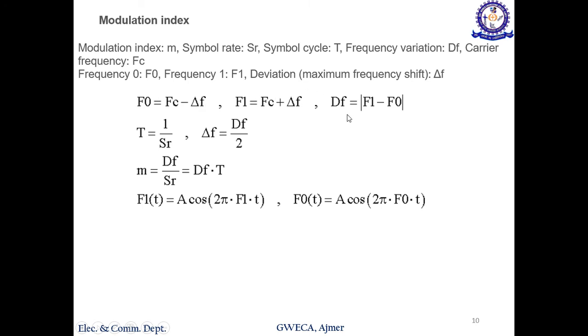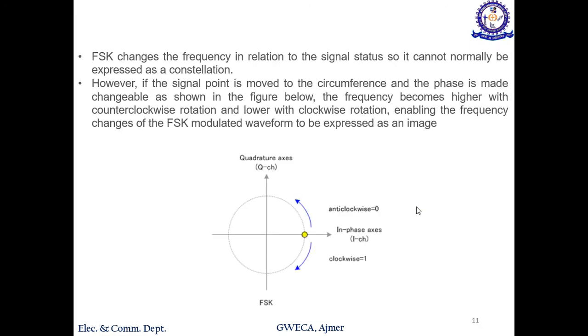Deviation in frequency variation is given by Df = F1 - F0 (higher minus lower is the frequency variation). T, the symbol cycle, is given by 1/Sr (one upon symbol rate). Δf, the frequency shift, is given by Df/2 (frequency variation by 2). The modulation index m is given by Df/Sr. These are all the formulas you have to remember. F1(t) is given by A cos(2π F1 t), and F0(t) is A cos(2π F0 t).